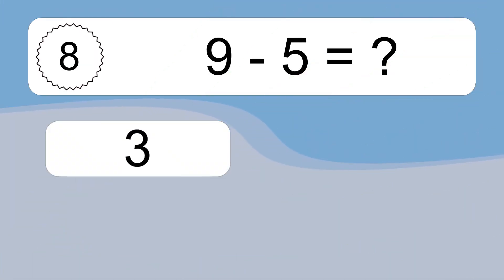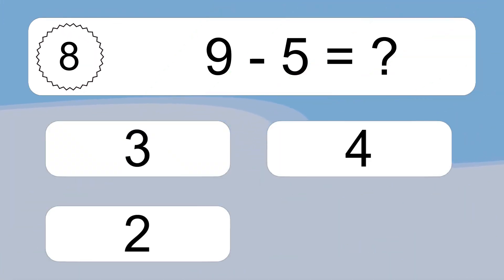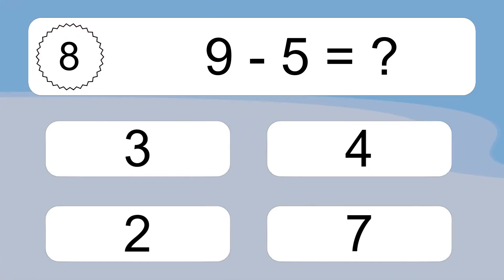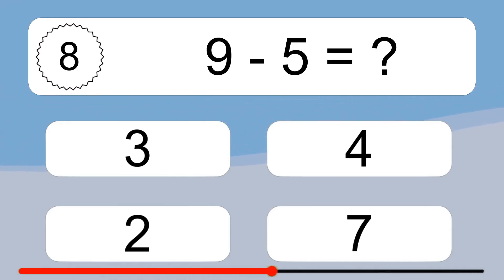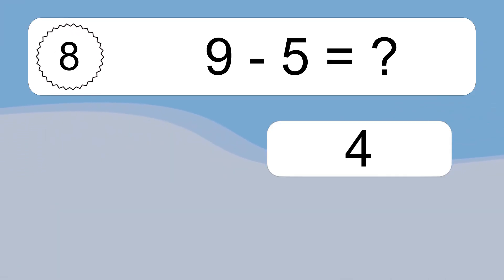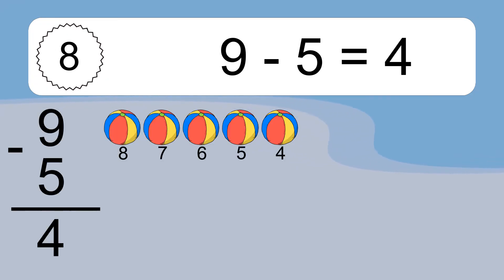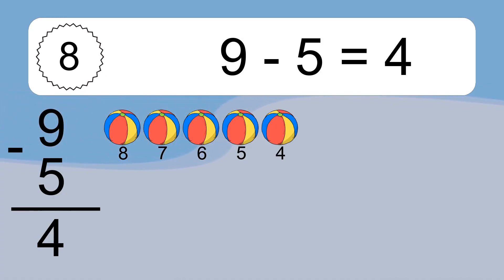9 minus 5 equals what? 9 minus 5 equals 4. Let's count it. 8, 7, 6, 5, 4.